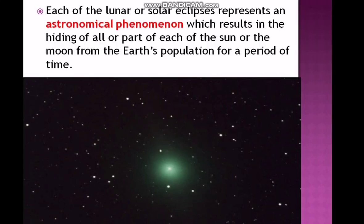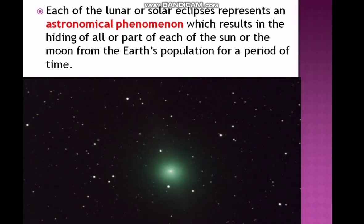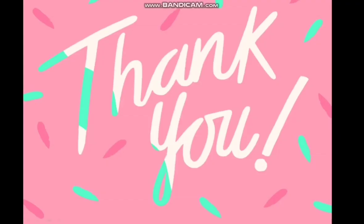Each of the Lunar and Solar Eclipses represents an astronomical phenomenon which results in the hiding of all or part of the Sun or the Moon from the Earth's population for a period of time. Thank you.